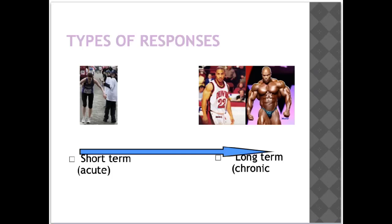Responses can be divided into short-term effects, which we call acute responses, or long-term effects, which we call chronic responses. Acute effects occur as a person is performing the exercise, while chronic adaptations occur in the hours, weeks, months, or even years after a period of training.